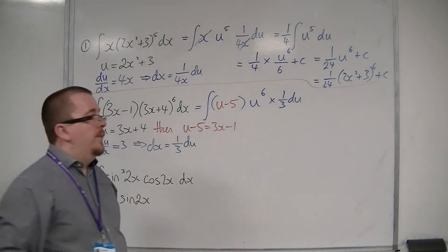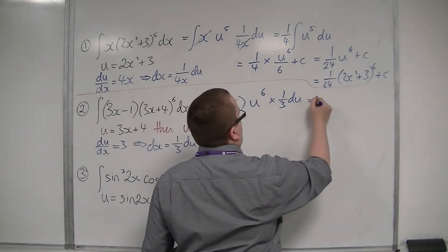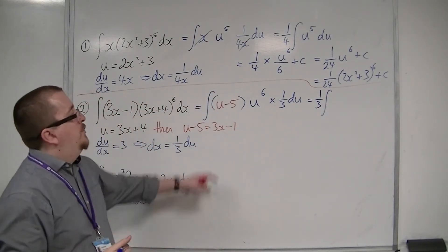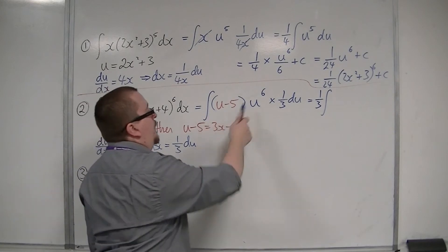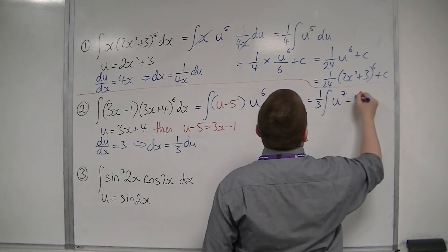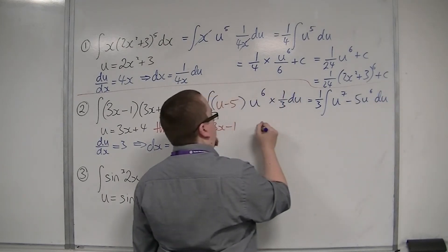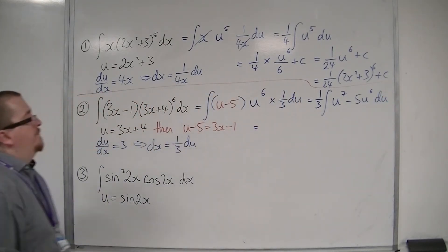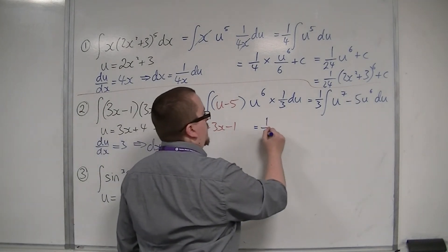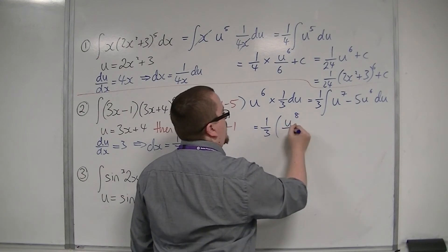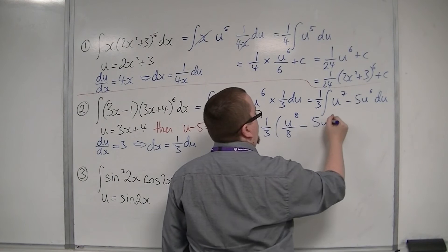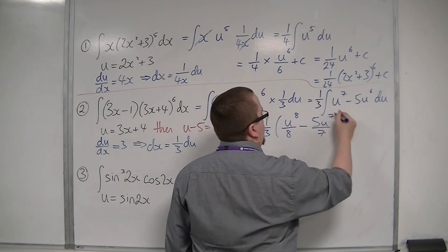So with this integral, I can pull the 1/3 out of the front, and then I'm going to multiply out these brackets, (u-5) times u⁶, which is u⁷, take away 5u⁶. So then I can integrate, so I'm going to add 1 to the power, divide by the new power, take away 5u⁷/7, plus c.